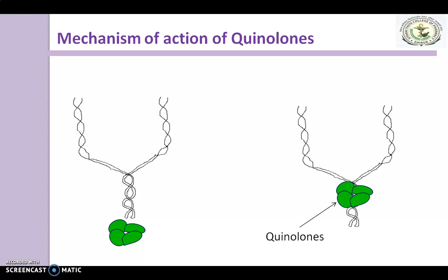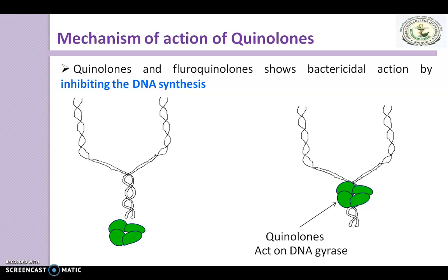Quinolones bind to DNA gyrase and inhibit its activity. Due to this inhibition, bactericidal action is produced by inhibiting DNA synthesis. As the activity of topoisomerase 2 is inhibited, the supercoiling is not removed and replication is stopped. Thank you very much and happy learning.